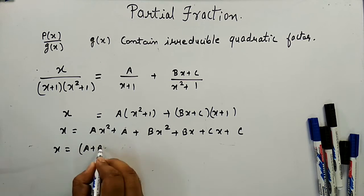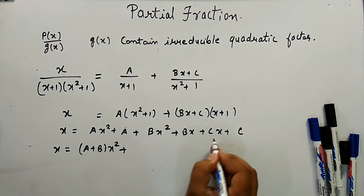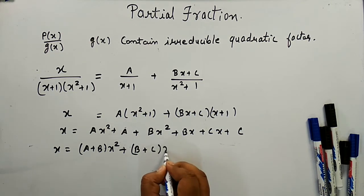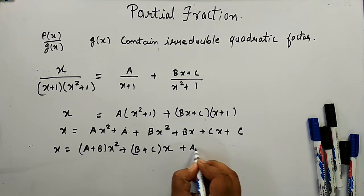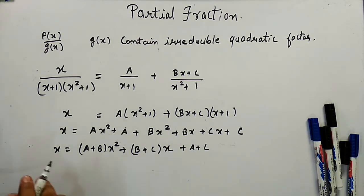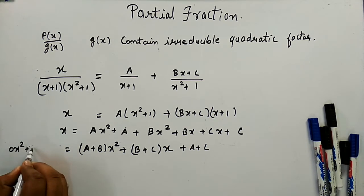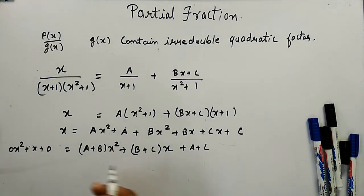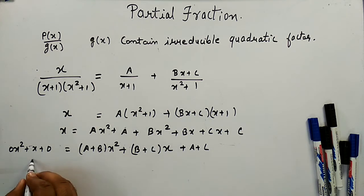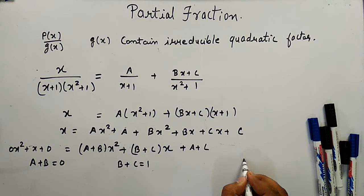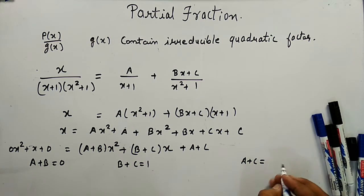Collecting terms: (A + B) is the coefficient of x², (B + C) is the coefficient of x, and (A + C) is the constant term. Writing x as 0x² + x + 0 and comparing coefficients gives: A + B = 0, B + C = 1, and A + C = 0.